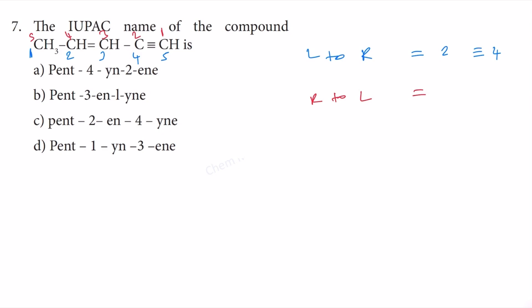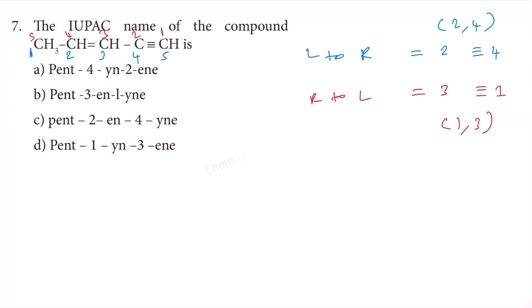Therefore, this is 1,3 as a set, and the other one is 2,4 as a set. Therefore, the correct way of numbering here is right to left. We do not have a tie here. When you have a tie, you can give preference to the double bond, but because we don't have a tie here, the correct way of numbering is right to left.